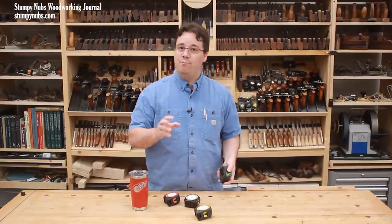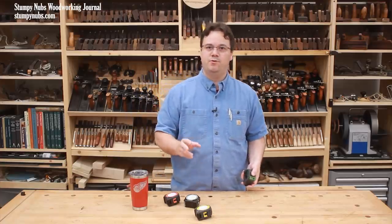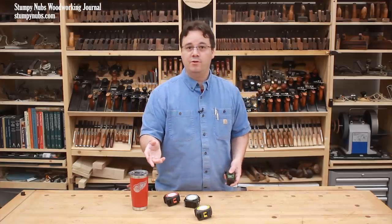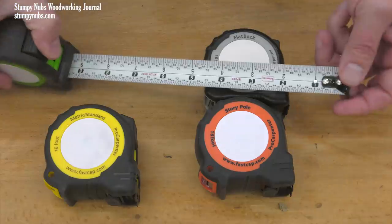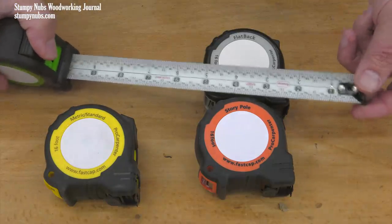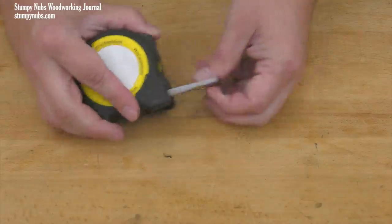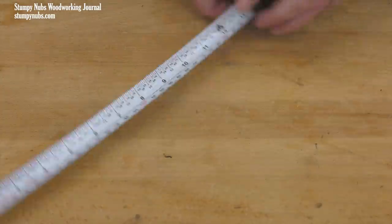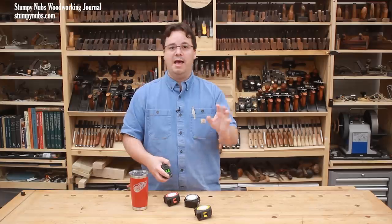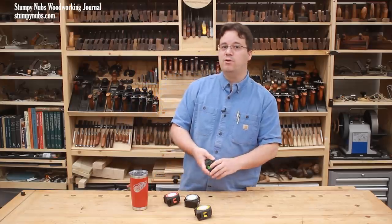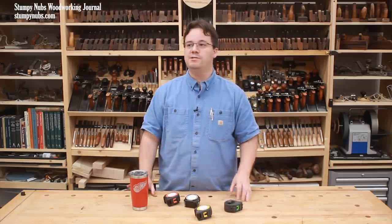Sometimes it pays to have more than one type of tape for the job. That story pole tape, for example, or the flat back, or maybe even a left hand right hand tape so the numbers are upright no matter which direction you measure in. I definitely recommend that you have one with both imperial and metric measurements. Ever buy a set of project plans and wish they were converted to the system your country uses? Get requests like that all the time on our website.